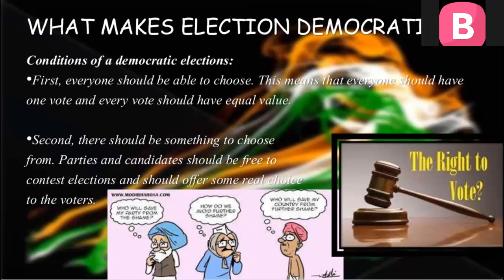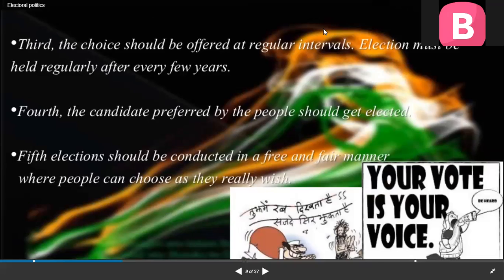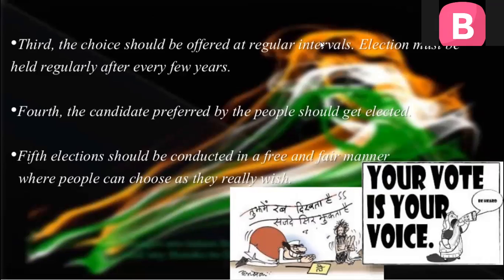Next, the choice should be offered at regular intervals, and regular interval means a fixed time for elections. Like in India it is five years, in America it is four years, in Mexico it is six years — elections must be held regularly after every few years. Next, the candidate preferred by the people should get elected. And last, elections should be conducted in a free and fair manner where people can choose as they really wish.